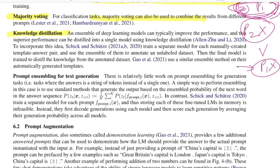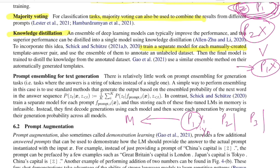Knowledge distillation involves training a separate model for each manually created template-answer pair. For example, with prompts p1, p2, and p3 all solving the same sentiment classification task but designed differently, each prompt paired with input samples produces y values. You take a pre-trained language model M, fine-tune it on each prompt's data using the actual labels, and back-propagate accordingly.